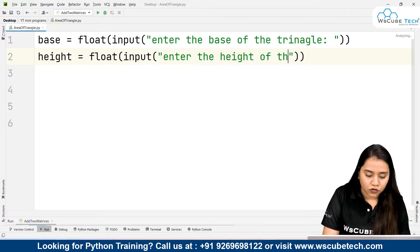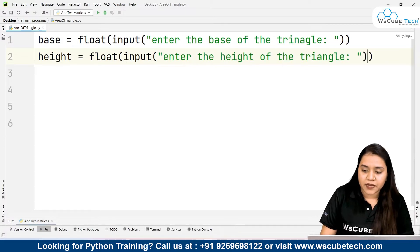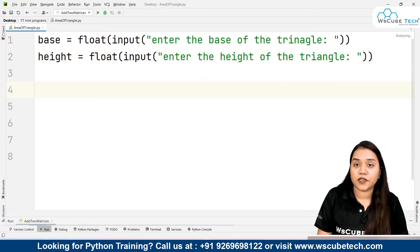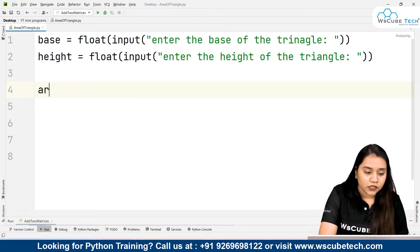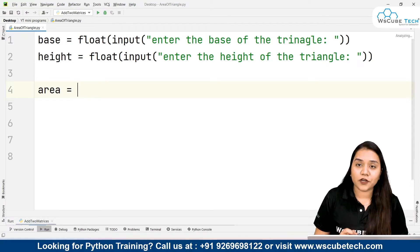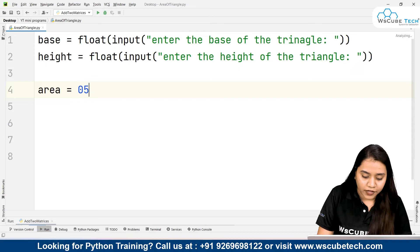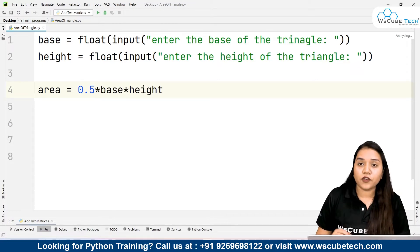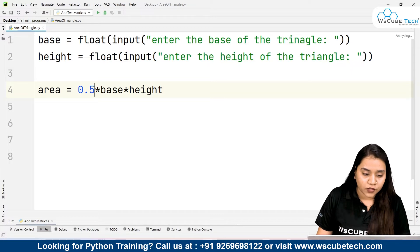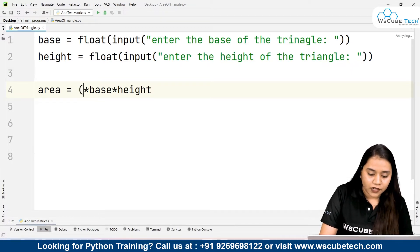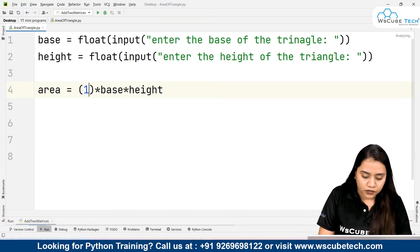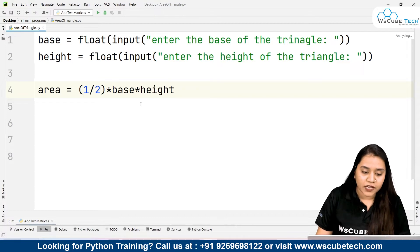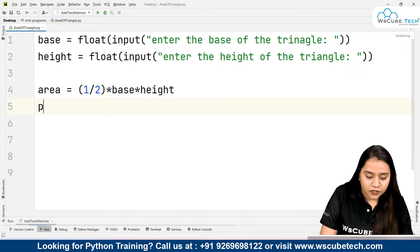Once we have taken the base and height of the triangle, the next thing we need to do is write the formula. So area equals half times base times height. Half can be written as 1 by 2 or as 0.5. You can write 0.5 times base times height, or you can put a bracket and pass 1 divided by 2, that is half times base times height.